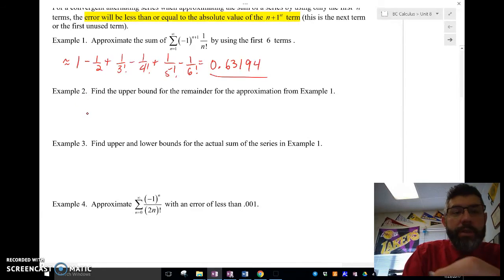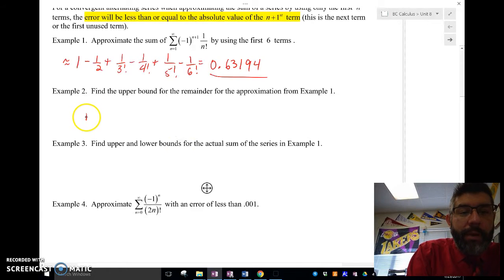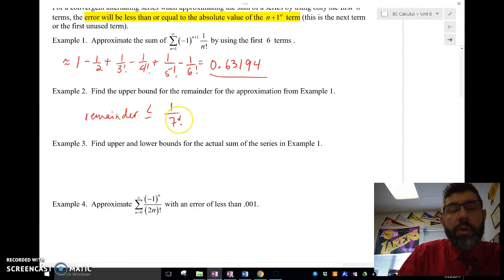value of my next term. So I know by using this alternating series remainder that my remainder is going to be less than or equal to whatever the next term was, which was 1 over 7 factorial.